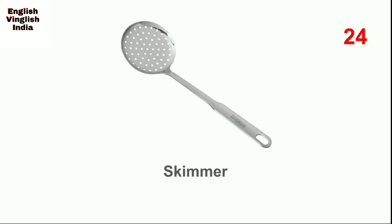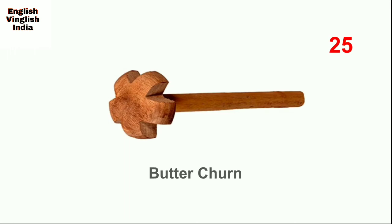Next, skimmer. A skimmer is used to drain oil while retrieving items — for example, when we make puris we use a skimmer. You can also use it for lifting cream from milk. Next, butter churn. A butter churn is used to convert cream into butter by churning — churning is the process of shaking up cream to make butter.